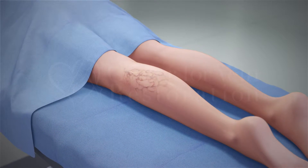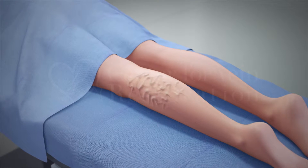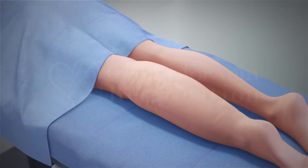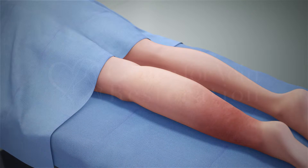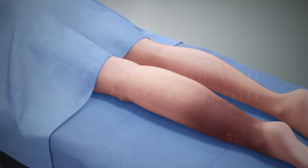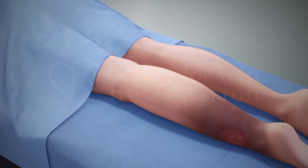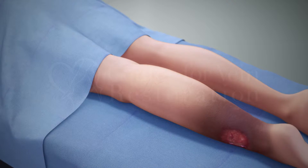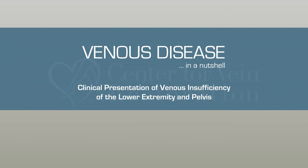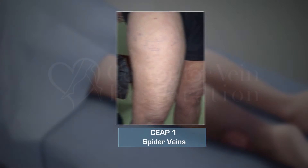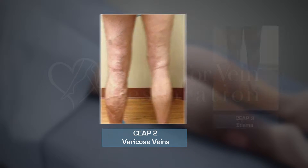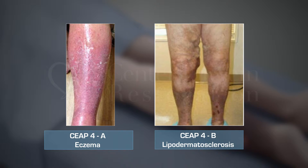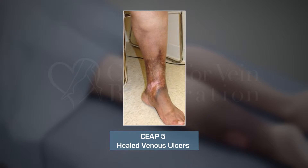Ambulatory venous hypertension is what changes the hemodynamic balance at the capillary level, causing tissue changes that lead to the signs and symptoms of venous insufficiency in the legs. These clinical presentations of venous insufficiency are classified by the CEAP classification.